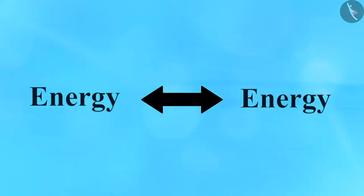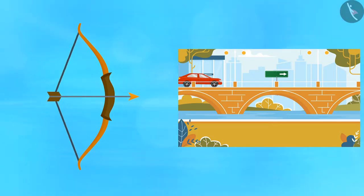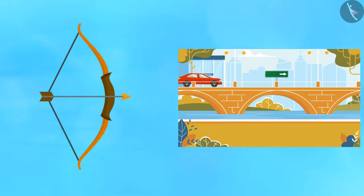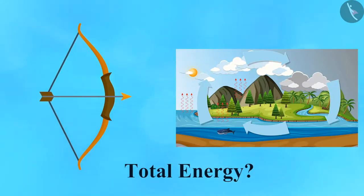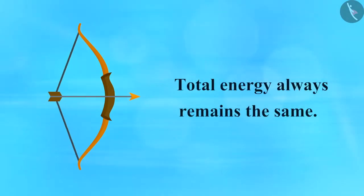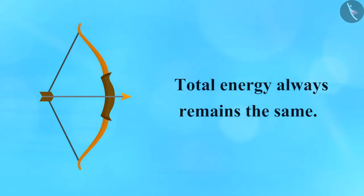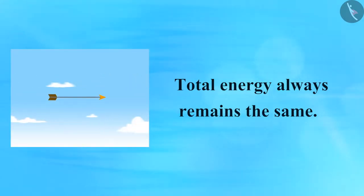Earlier, we studied that energy can be transformed from one form to another, like the energy transformation in water cycle and in photosynthesis, or the examples of bow and arrow and a running car, which involves human activities to transform energy. But do you know what happens to the total energy of the system before and after the transformation? The total energy always remains the same, even when energy is transformed from one form to another. This is known as the Law of Conservation of Energy.